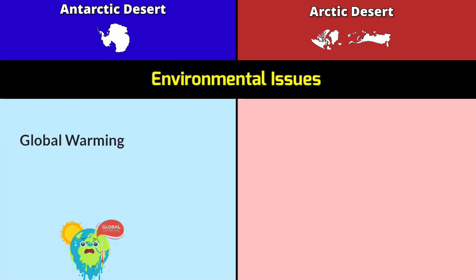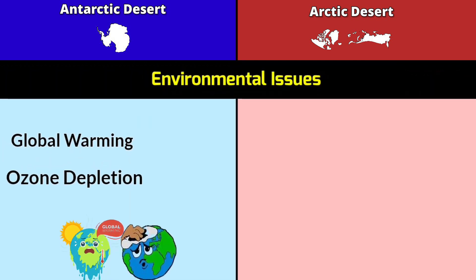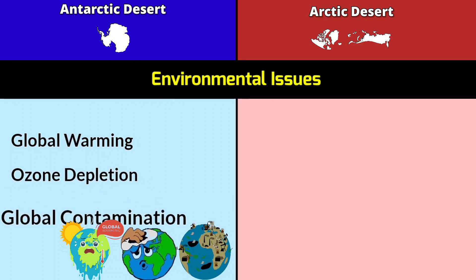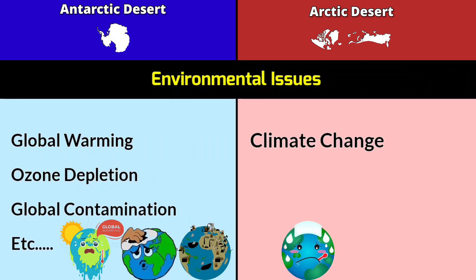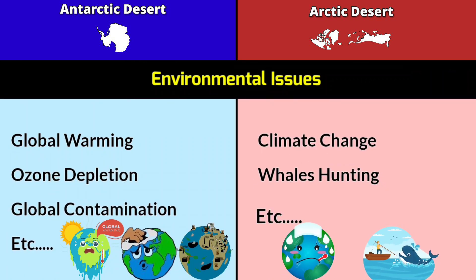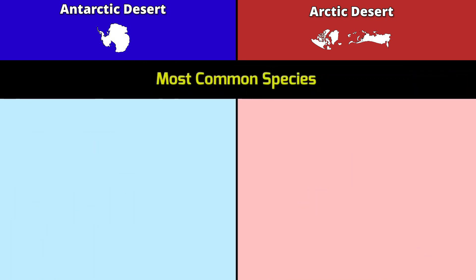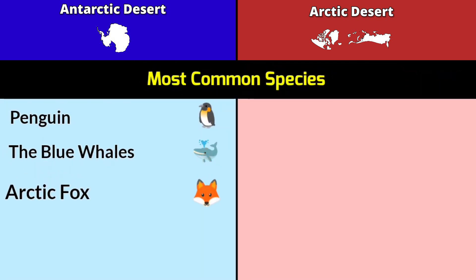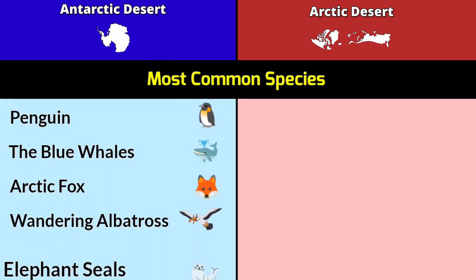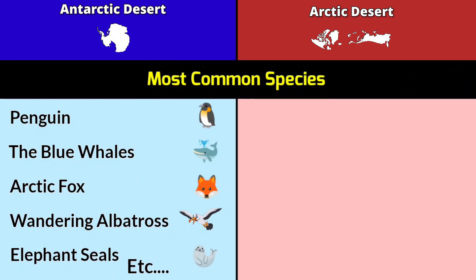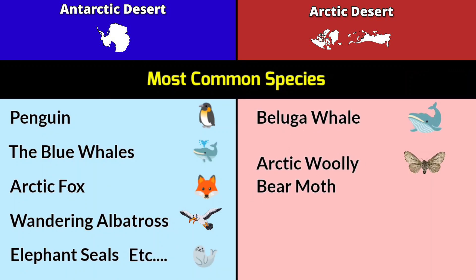Environmental issues for Antarctica: global warming, ozone depletion, global contamination, and more. For the Arctic: climate change, whale hunting, and more. Most common species — Antarctica: penguin, blue whale, wandering albatross, elephant seals, and more. Arctic: beluga whale, arctic woolly bear moth, arctic fox, polar bear, and more.